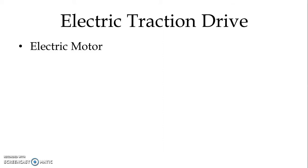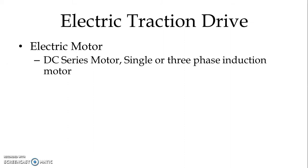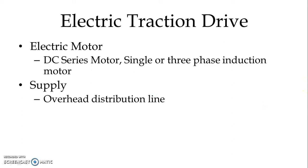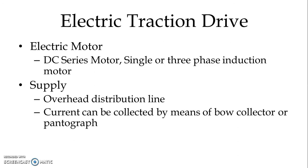We use electric motors for the purpose of traction in locomotives. We use DC series motor or single phase or three phase induction motor for the purpose of traction. To give the supply to the electric motor, we use overhead distribution lines from the grid system or nearby substation provided for the traction purpose. We can collect current from the overhead conductor by means of a bow collector or pantograph.